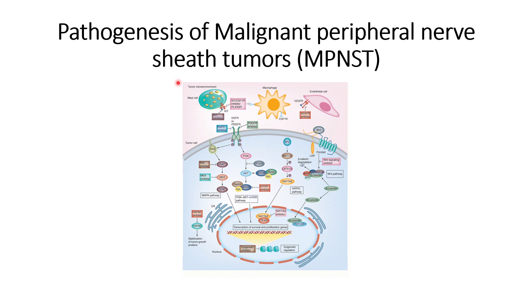In this video we will discuss the pathogenesis of malignant peripheral nerve sheath tumor (MPNST). This tumor is basically considered a soft tissue tumor. There are various reasons that might cause this kind of tumor, and people have proposed theories targeting specific pathways to inhibit these tumors. Let us first understand the possible causes of MPNST.